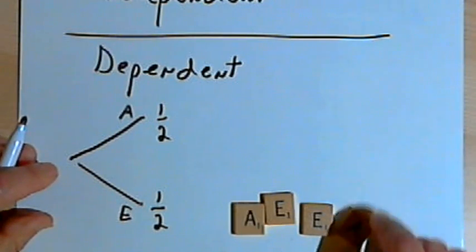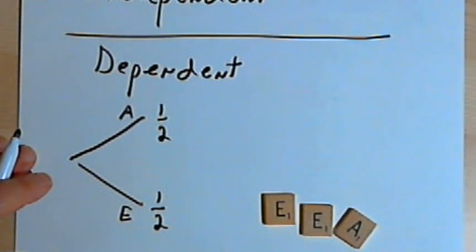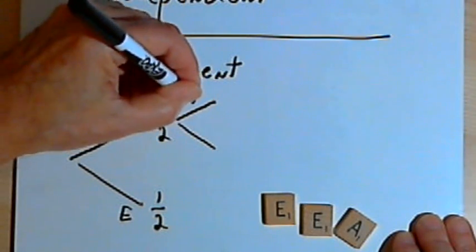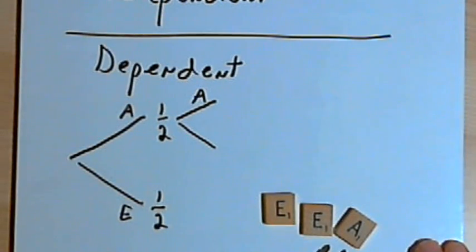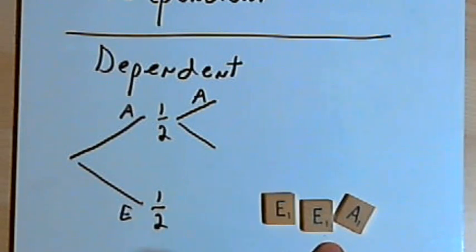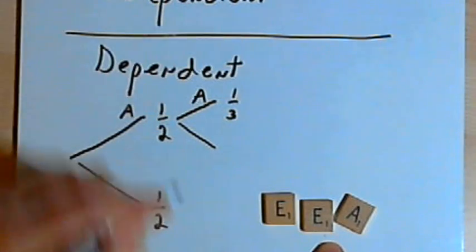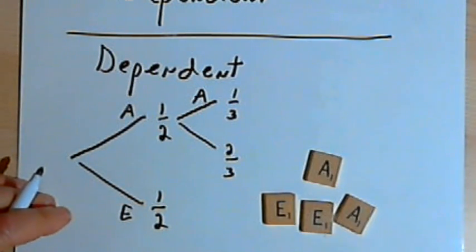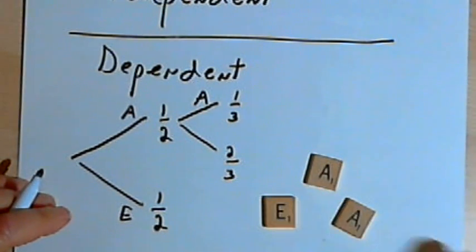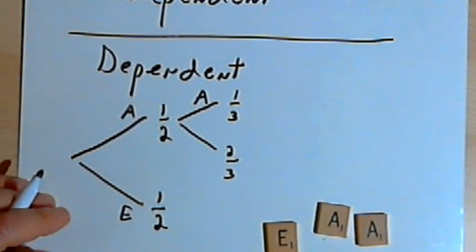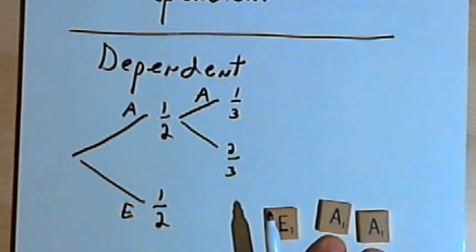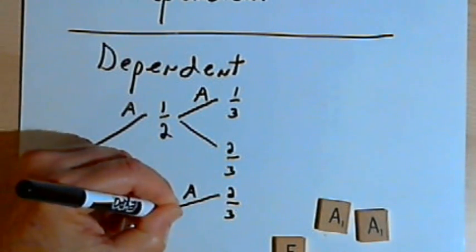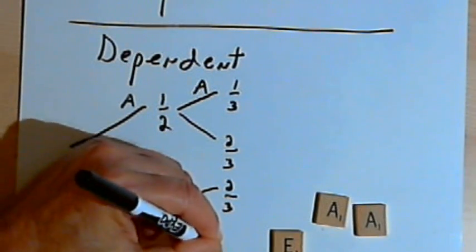This time I don't replace the letter that I picked. So let's say I get an A and don't put it back in the bag. Now on the second turn, what's my probability for getting an A? Well, it's no longer one-half — I've only got one A left in the bag and there are three letters in the bag, so my probability of getting an A the second time around is only one-third, and my probability of getting an E is two-thirds. If I had gotten an E the first time and didn't replace it, there would be two A's in the bag and only one E, so my probability of getting an A would be two-thirds and my probability of getting an E would be one-third.